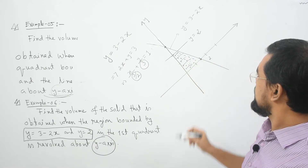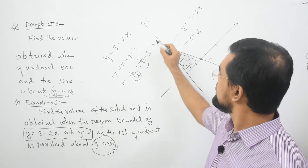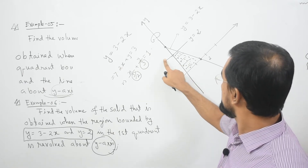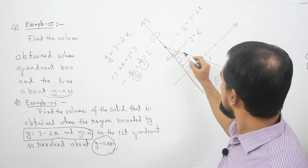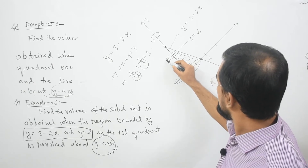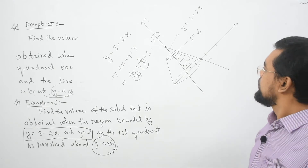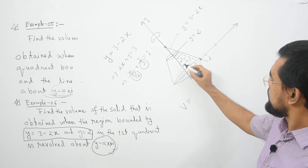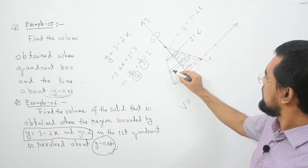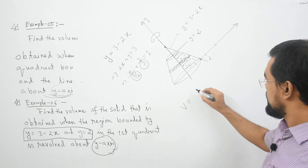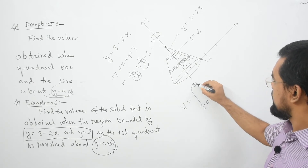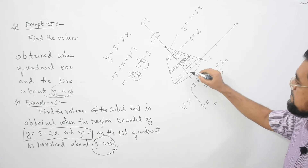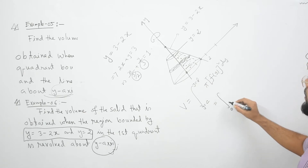So if you revolve this region about the y-axis, you will get a solid material. And if you take a cross section here, it will be perpendicular to the y-axis. So our formula will be the second one. Here y starts at 0 and ends at 2.